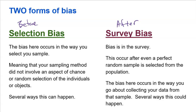Survey bias, in my terms, happens after you have your sample. So the bias is not in the people that you selected — the bias is in your survey. This occurs after even a perfect random sample is selected. Maybe you have the greatest, most perfect sample in the world, but your survey is biased. The bias here occurs in the way you go about collecting your data from that sample. Selection bias happens before — your wrong plan created a bad sample. Survey bias happens after you have your sample, but how you collect the data is bad.